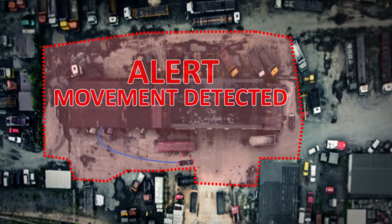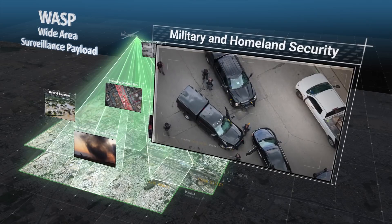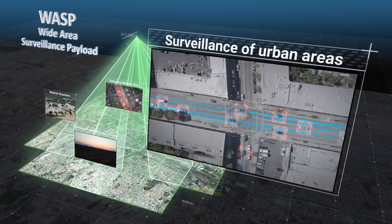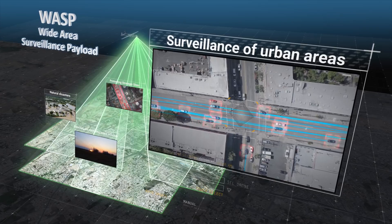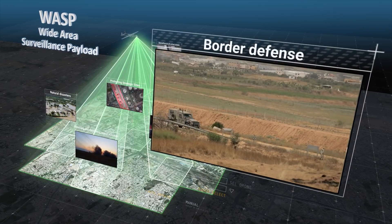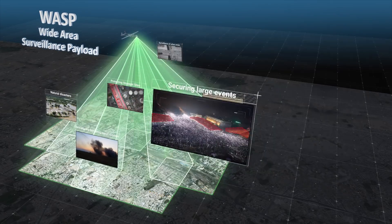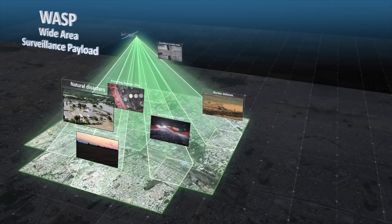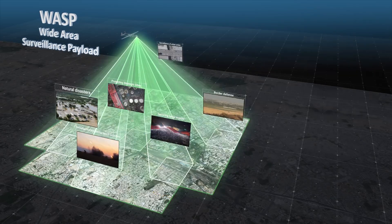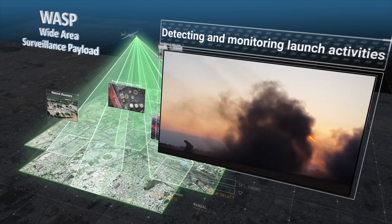The WASP system has many uses for both military and homeland security: surveillance of urban areas for police or military usage, border defense, protection of strategic sites, securing large events, control and coverage of natural disasters, and detecting and monitoring launch activities before and after the launch.